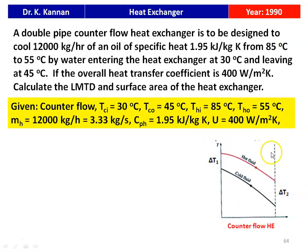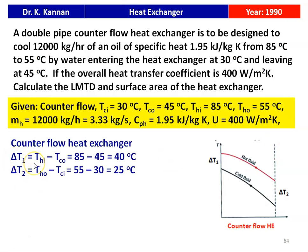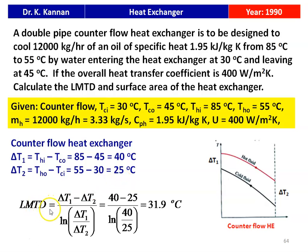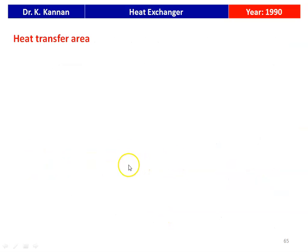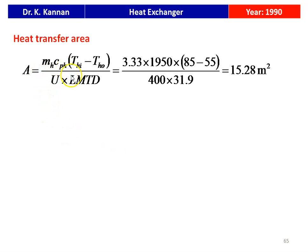For the counter flow heat exchanger temperature profile, ΔT1 = THI − TCO = 85 − 45 = 40°C, and ΔT2 = THO − TCI = 55 − 30 = 25°C. LMTD = (40 − 25) / ln(40/25) = 31.9°C. Heat transfer area A = MH × CpH × (THI − THO) / (U × LMTD) = 3.33 × 1950 × 30 / (400 × 31.9) = 15.28 m².